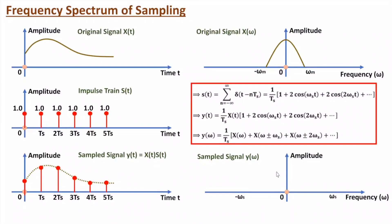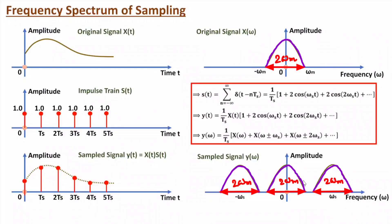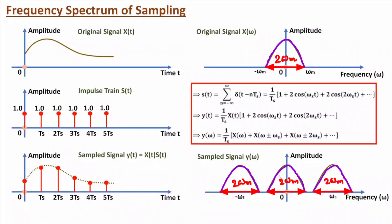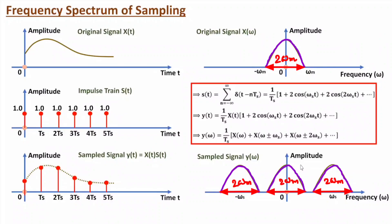Plotting the frequency spectrum: at zero we have X(ω) with maximum frequency ωm. Around ±ωs and ±2ωs we have additional spectral bands, each of width 2ωm. If the sampling frequency Fs is less than 2ωm, these bands will overlap. That is why we must keep the sampling frequency greater than or equal to 2Fm to prevent overlap.